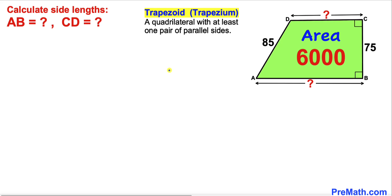Welcome to pre-math. In this video we have trapezoid ABCD, where the area of this trapezoid is 6,000 square units, side length BC is 75 units, and side length AD is 85 units.